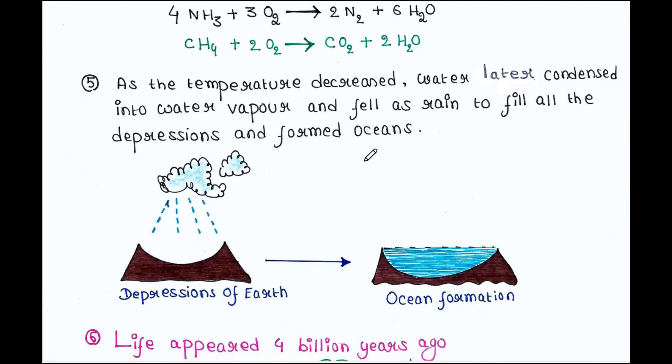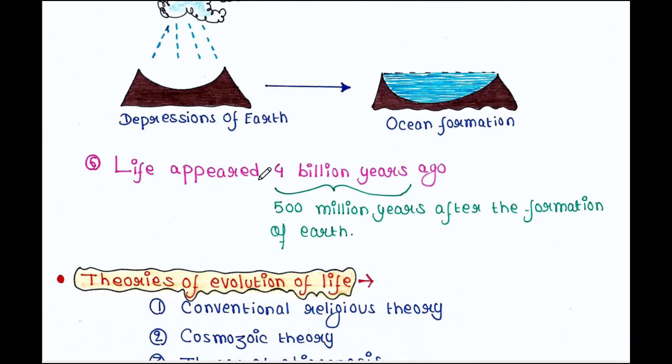As the temperature decreased, the water condensed into water vapor and fell as rain to fill all the depressions and formed oceans. Life appeared 4 billion years ago. That is, 500 million years after the formation of Earth.